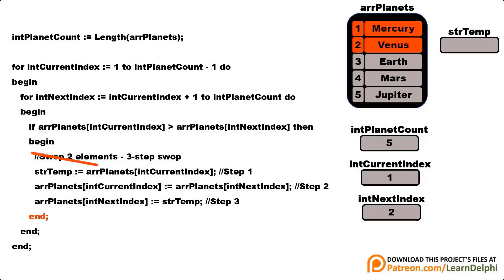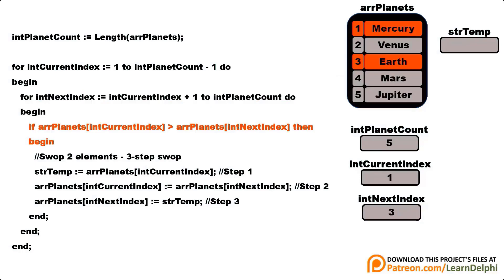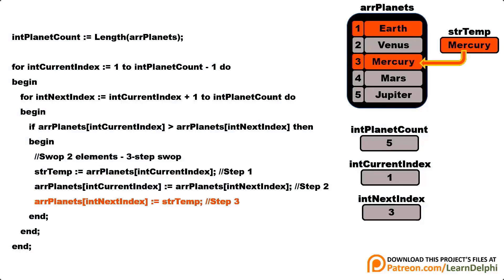The inner loop increments and finds Earth at the next index. The if statement checks if Mercury is greater than Earth — Earth must go into position 1, so a swap must be performed. In step 1, Mercury is written to the temp variable. In step 2, Mercury is overwritten with Earth. In step 3, Mercury in the temp variable is written back into the array where Earth was. Now Earth is in the first position and the if statement ends.